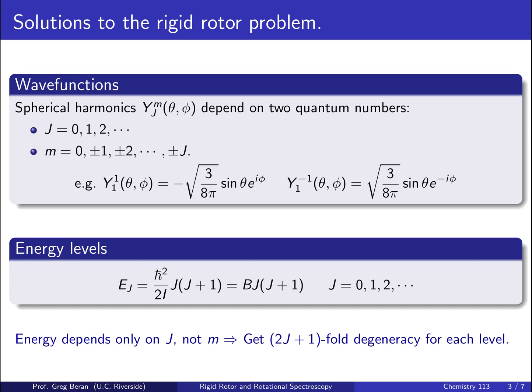We also get energy levels, E_J, which equals h-bar squared over 2I times J times J plus 1. Two things to note here. First, we often, for the ease of use in spectroscopy, lump the constants h-bar squared over 2I into a single constant, B. Second, the energy levels don't depend on the quantum number m at all.